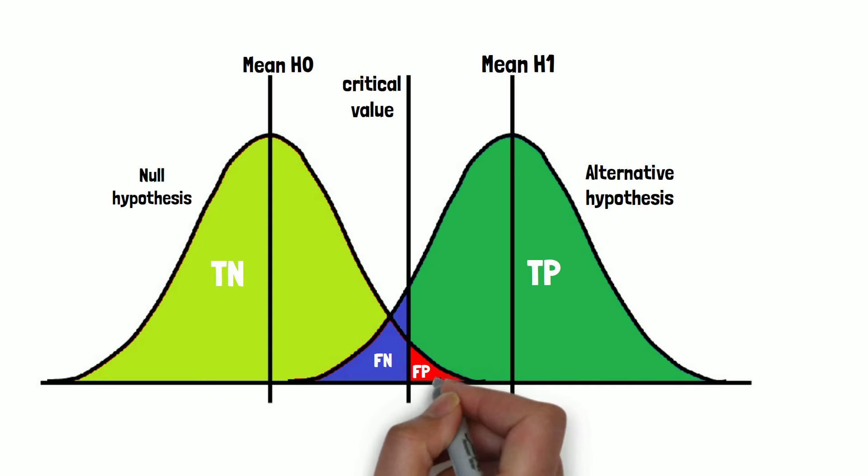The latter kind of error is the error of the first kind or also called alpha error or type 1 error. It is one of the crucial factors that biostatisticians include already in the beginning of the clinical trial, for example in the sample size calculation.